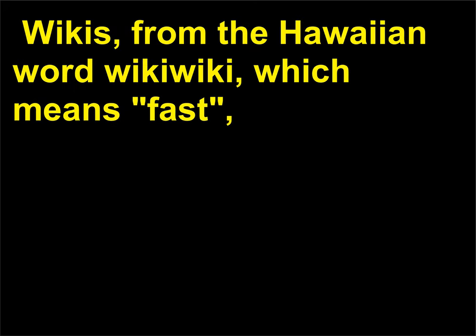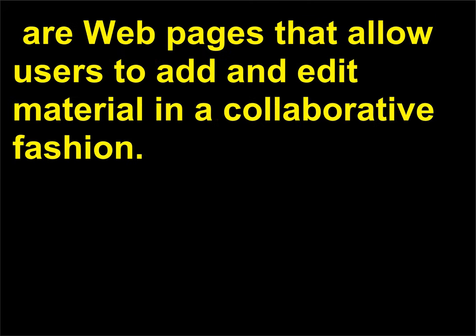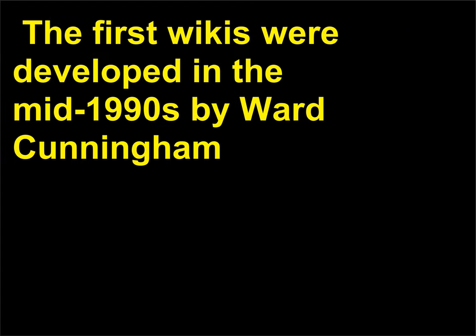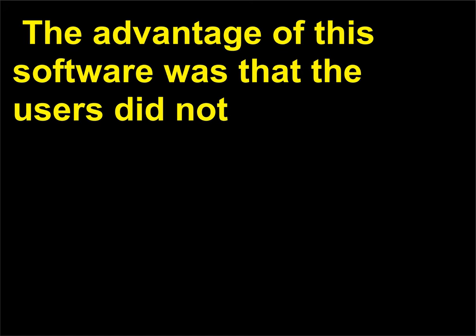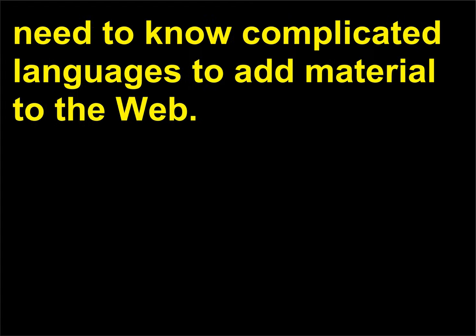Wikis, from the Hawaiian word wiki wiki, which means fast, are web pages that allow users to add and edit material in a collaborative fashion. The first wikis were developed in the mid-1990s by Ward Cunningham (1949) as a way for users to quickly add content to web pages. The advantage of the software was that users did not need to know complicated languages to add material to the web.